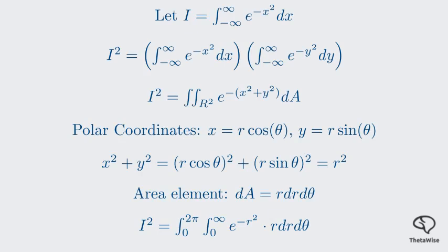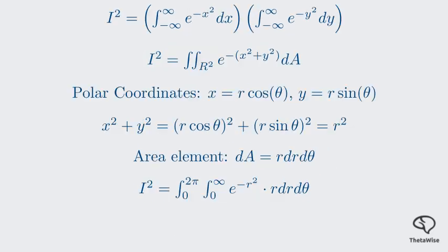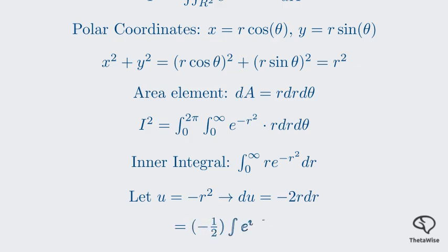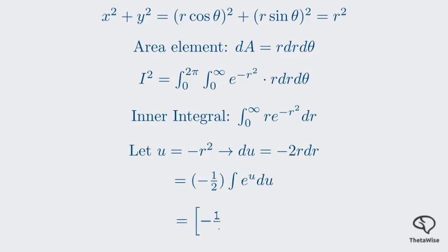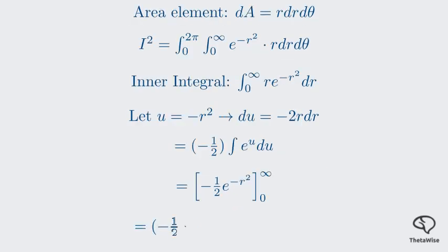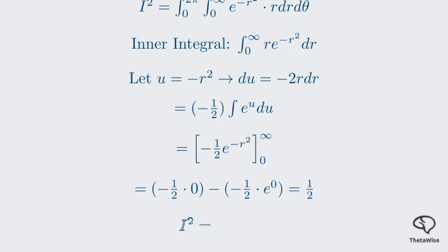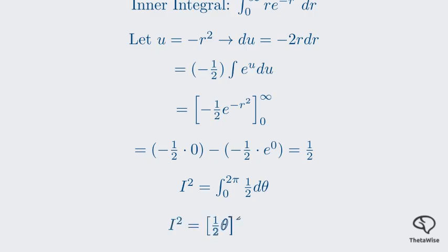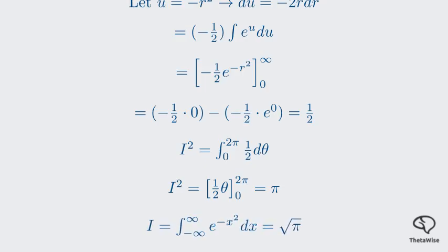The inner integral is perfect for a u-substitution. Let u = −r², then du = −2r dr, so r dr = −(1/2) du. The inner integral becomes −(1/2) ∫ e^u du = −(1/2) e^(−r²), evaluated from 0 to ∞. As r → ∞, e^(−r²) → 0. When r = 0, e^0 = 1. So we get 0 − (−1/2) = 1/2. Plugging back into the outer integral: I² = ∫₀²π (1/2) dθ = (1/2)(2π) = π. So I² = π, which means our original integral I = √π.